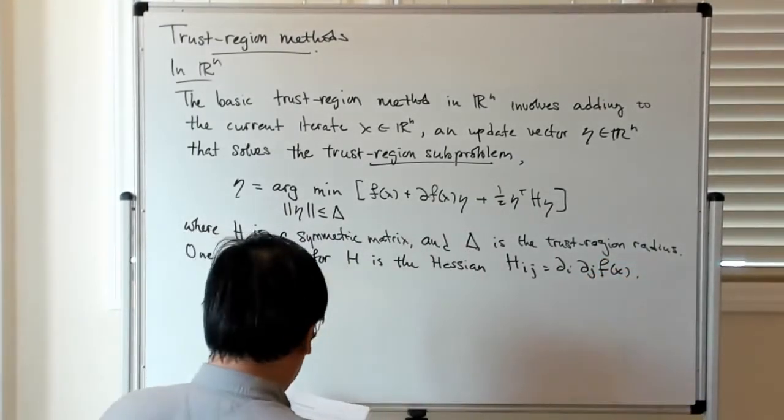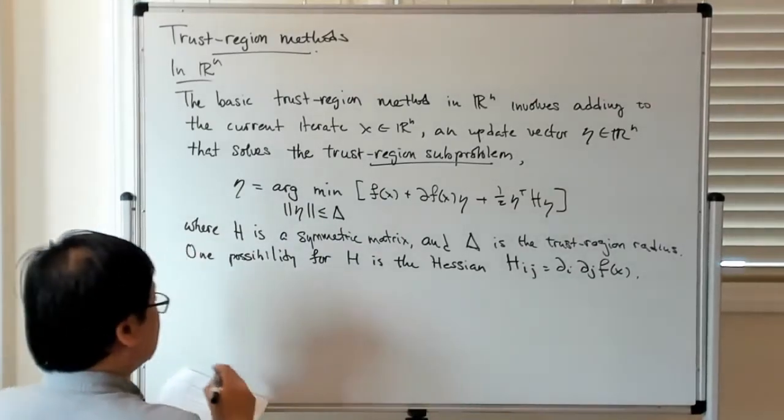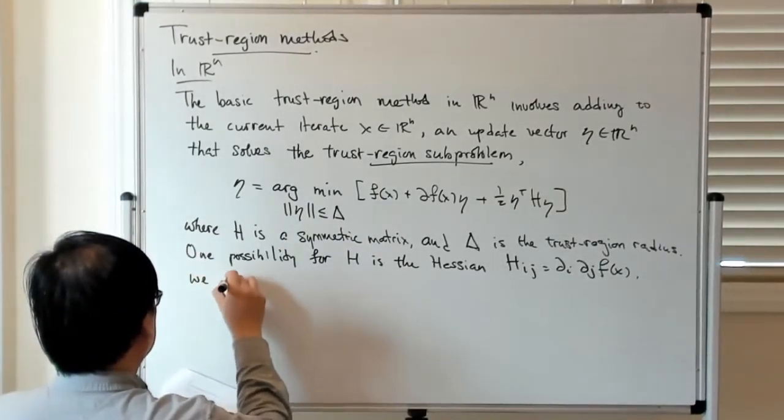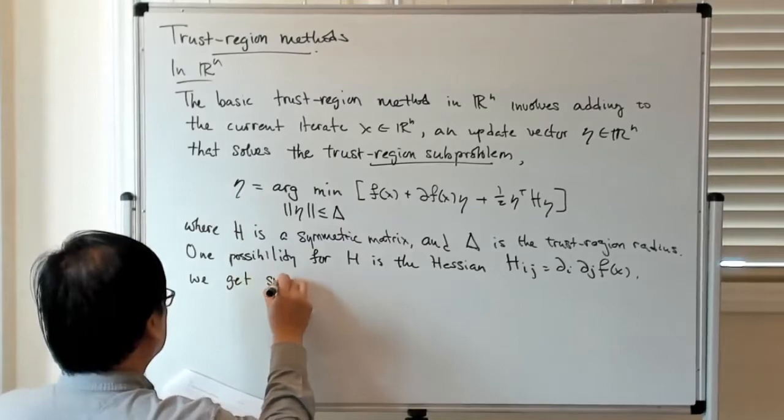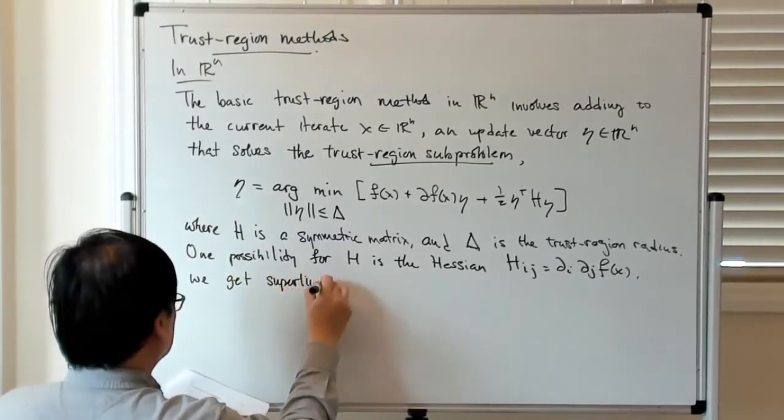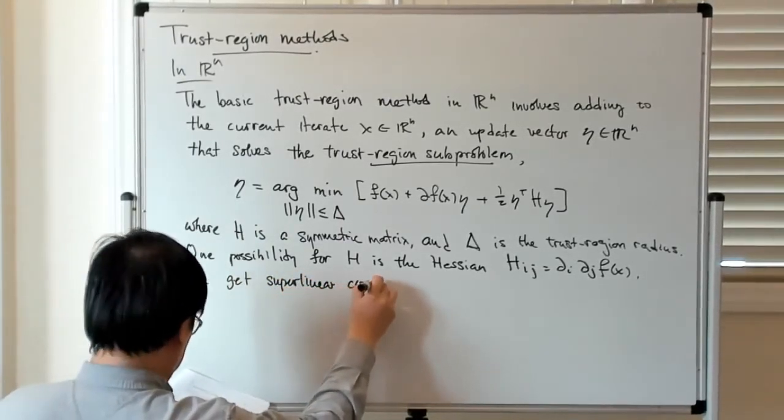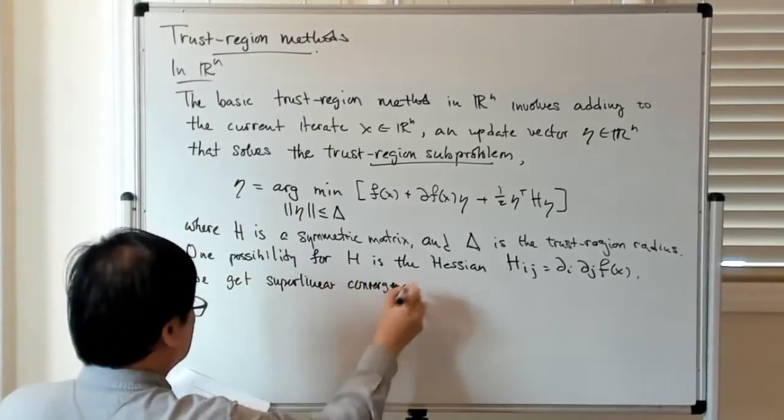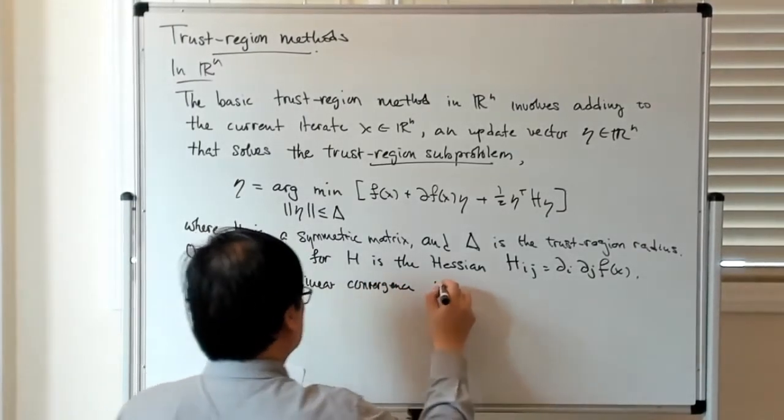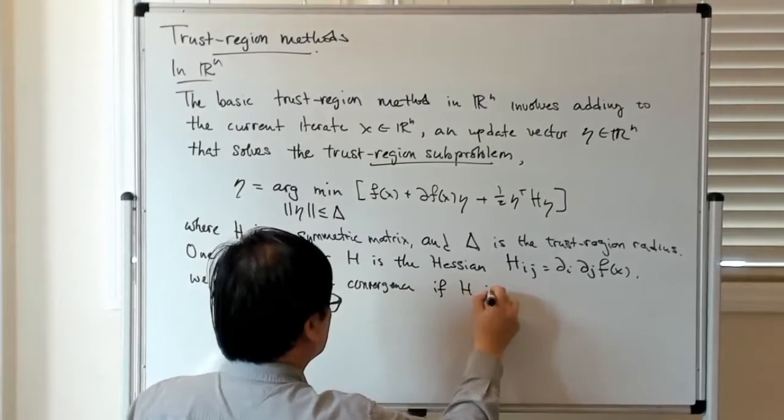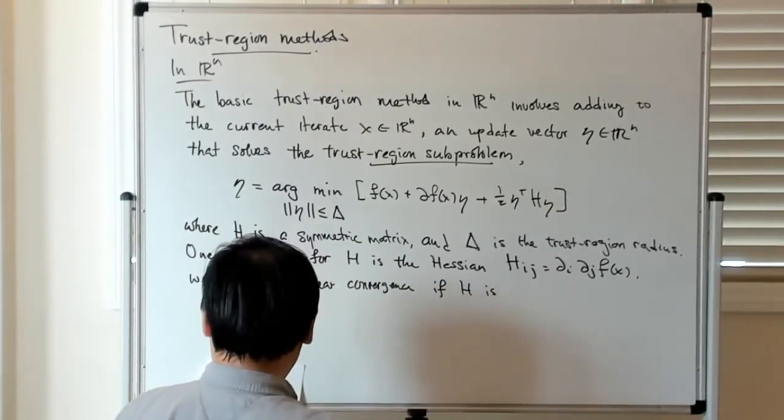And then we get superlinear convergence if H is sufficiently close to the Hessian.